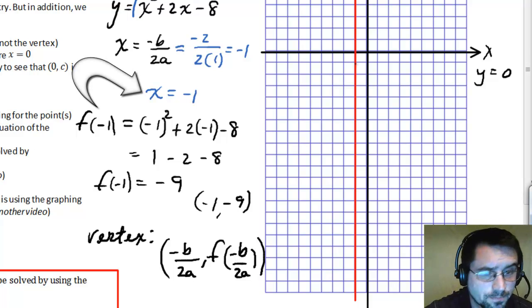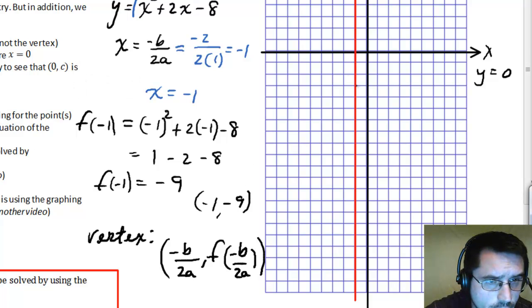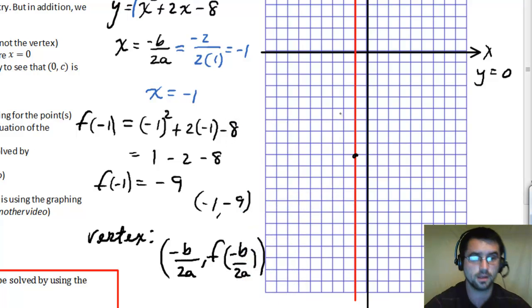Alright, let's graph this. Negative 1 comma negative 9. 1, 2, 3, 4, 5, 6, 7, 8, 9. There it is. Now I want to get some other points.